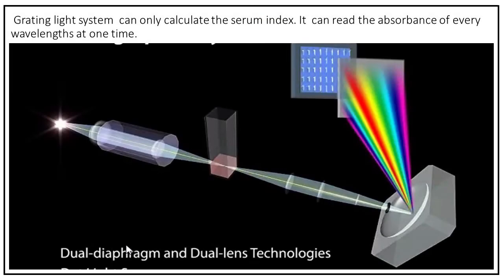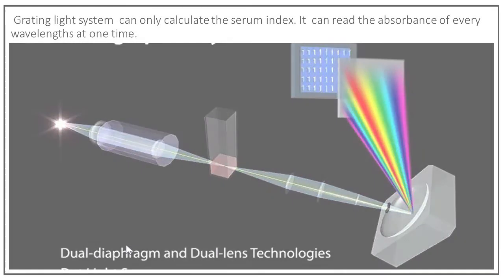The grading light system can calculate the serum index by reading the absorbance of every wavelength at one time.